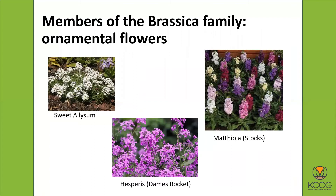There are even some members of the brassica family that are ornamental flowers. The one on the left is sweet alyssum — it's usually white, but there's a purple version. In the center is called dame's rocket, or hesperis, and we have seeds for this one at Kansas City Community Gardens — it's a biennial flower. The one on the right is called stocks, or Matthiola. You'll see this sometimes in bouquets as a cut flower. It really likes cool weather and can be a little tricky to grow here.